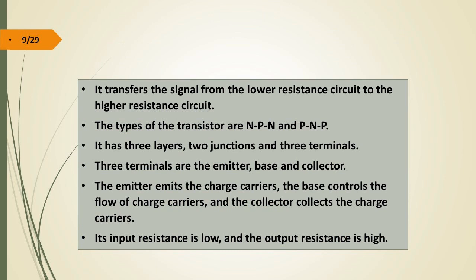The types of transistor are NPN and PNP. It has three layers, two junctions, and three terminals. The three terminals are the emitter, the base, and the collector. The emitter emits the charge carriers, the base controls the flow of charge carriers, and the collector collects the charge carriers. Its input resistance is low and output resistance is high.